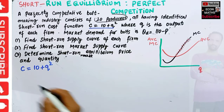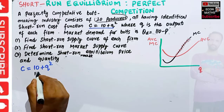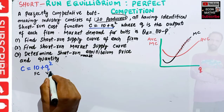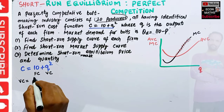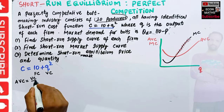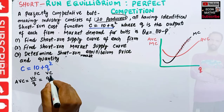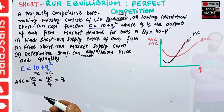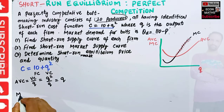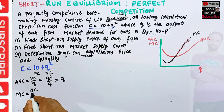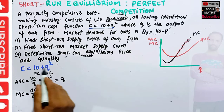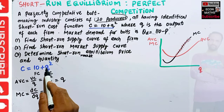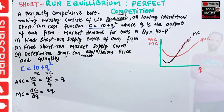First, we need to find the average variable cost. Since C = 10 + Q², the 10 is our fixed cost which does not depend on the level of output. Q² is our variable cost. So average variable cost = variable cost / output = Q² / Q = Q. Second, we need the marginal cost, which is the derivative of the cost function with respect to output. The derivative of 10 is 0, and the derivative of Q² is 2Q. So MC = 2Q.